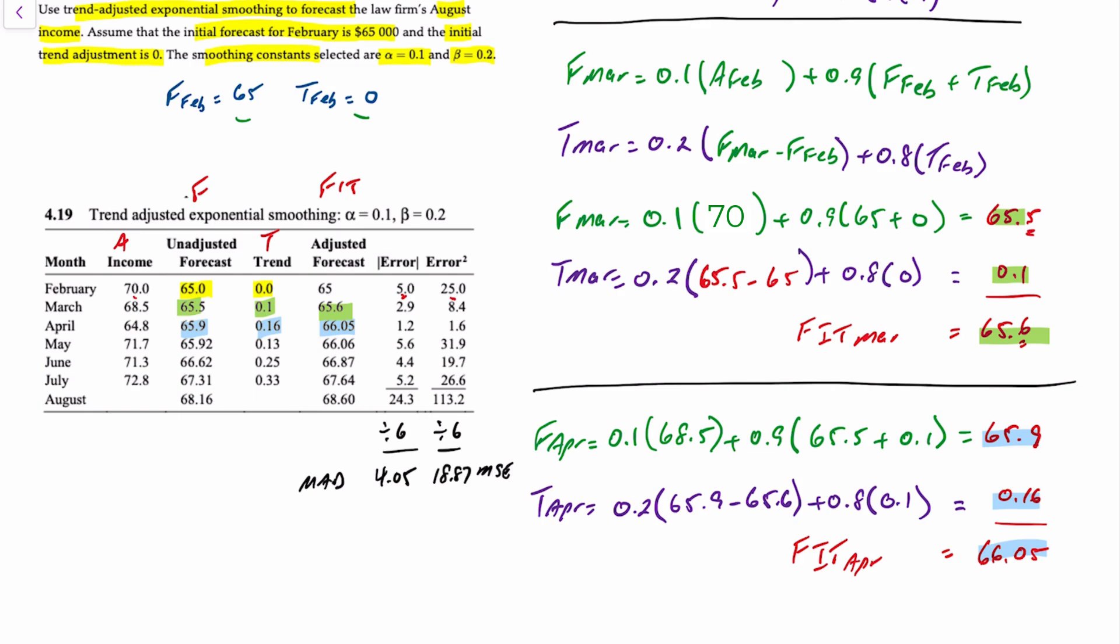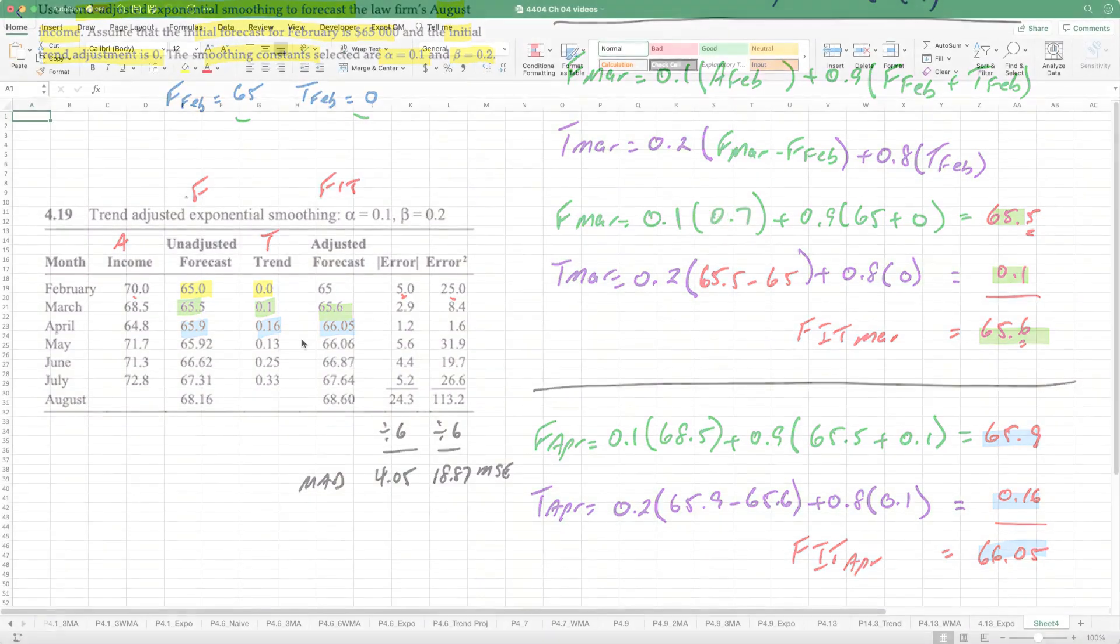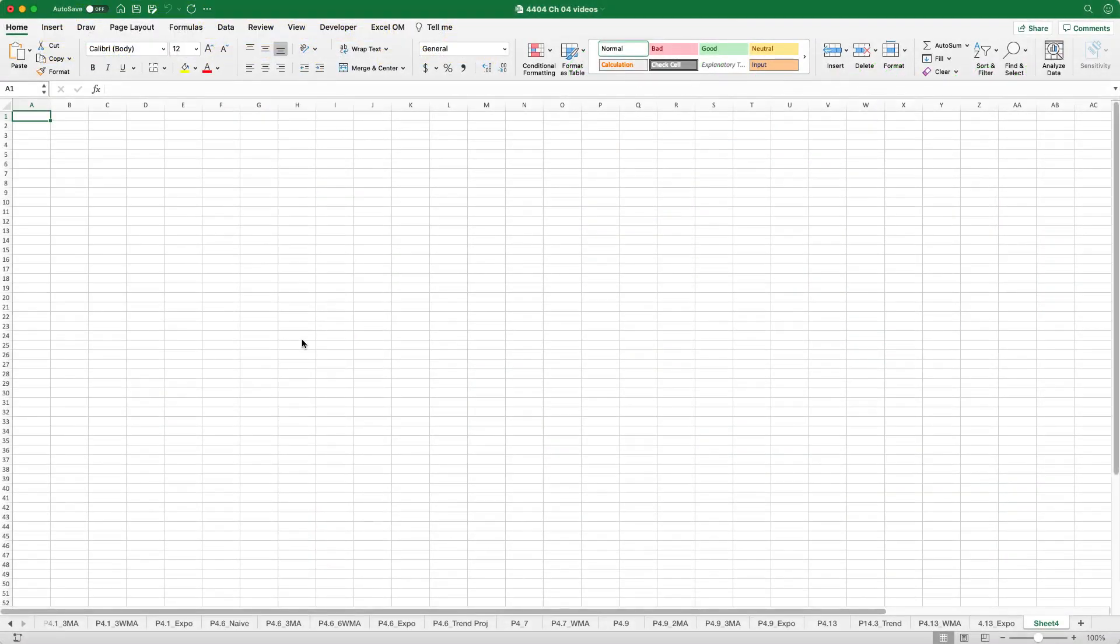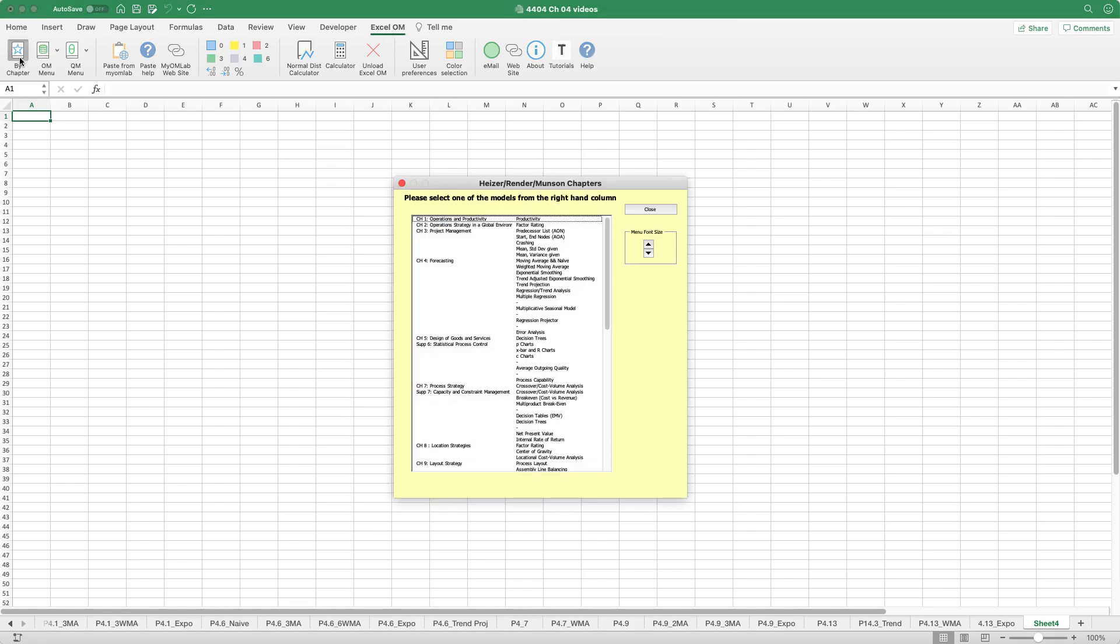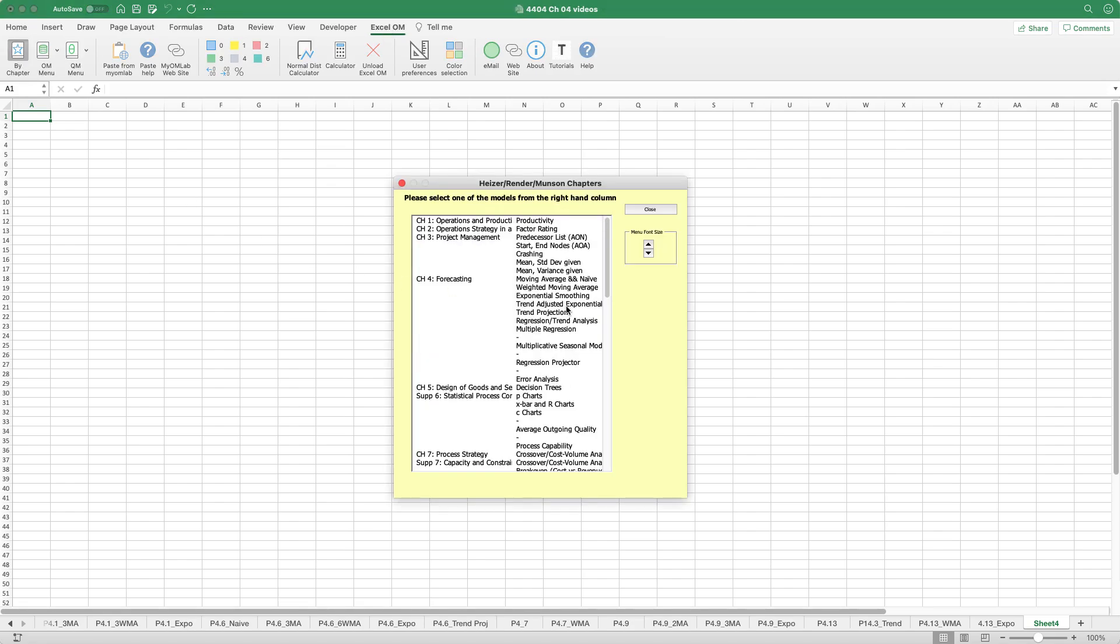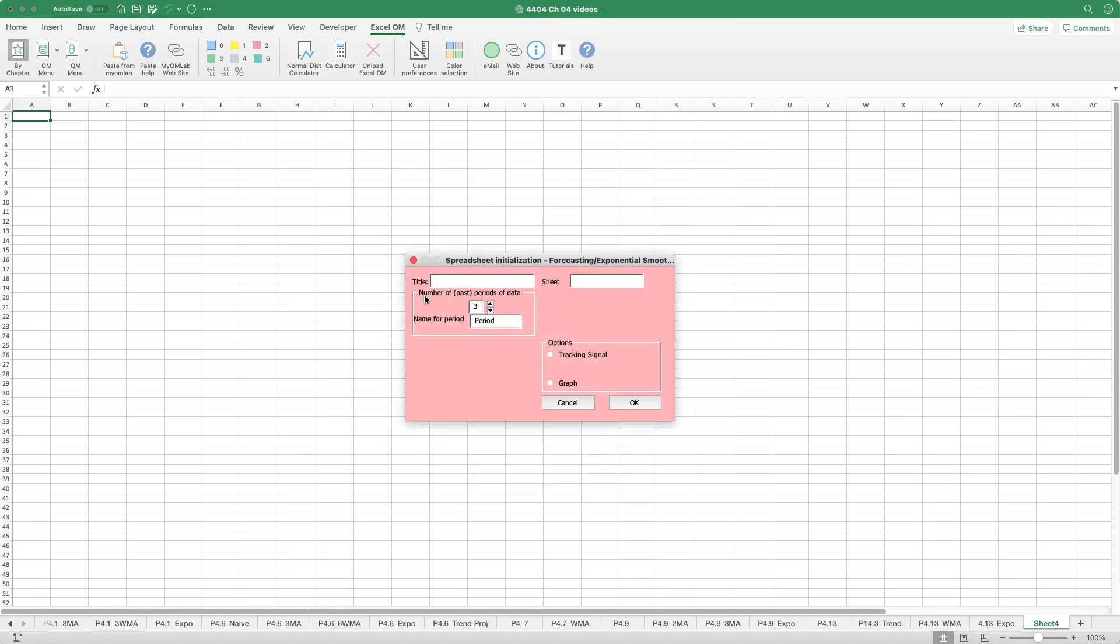Now I'll show you how to use Excel OM to do this a lot quicker. Go ahead and launch Excel OM and click Excel OM in the ribbon, go by chapter. This time we want for forecasting, trend-adjusted exponential smoothing. We'll call this 4.19 FIT. We're provided with six periods of historical data by month. We won't worry about the options just yet. Hit OK.